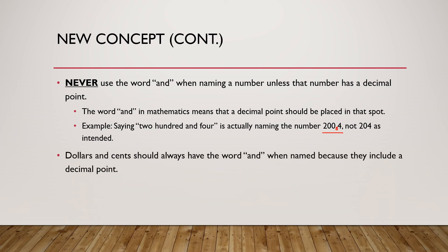However, if you're doing dollars and cents, then you always say the word 'and' because our dollars and cents have a decimal point. Here's $13 and 47 cents. So notice when you say 'and,' that's where that little decimal point is: $13 and 47 cents.